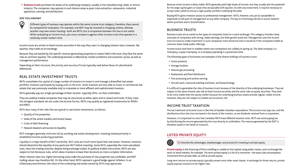Did you know? Different types of businesses may operate within the same income trust category, so they cannot be compared for evaluation. For example, one REIT may be invested in shopping centers, whereas another may own senior housing. When evaluating an income trust, you must compare it against other income trusts that operate in a relatively similar market niche. Income trusts are similar to fixed income securities in the way they react to changing interest rates. However, like equities, they trade on an exchange. Because they are backed by specific revenue-generating properties or assets held in the trust, they face the same risks as common equities. The underlying business is affected by market conditions, economic cycles, and management performance. Depending on their structure, the priority and security of trusts typically rank below those of subordinated debentures.